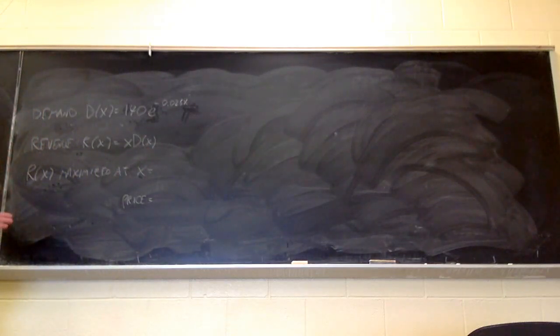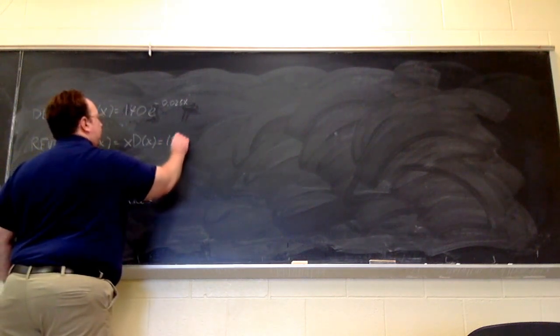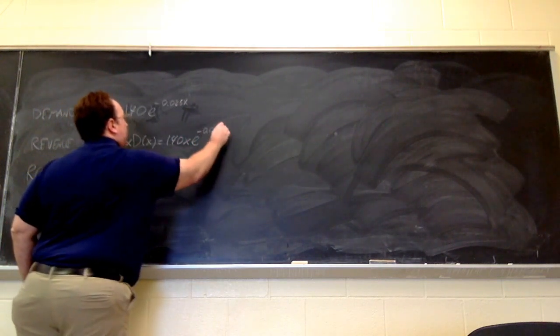Revenue is the number of units sold times the price per unit, which is what the demand function gives us. So we get 140x e to the minus 0.025x.